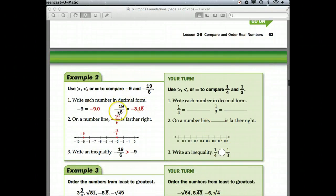Okay, example 2, we're to use the greater than, less than, or equal to, to compare a negative 9 and negative 19/6. So, first of all, let's write them both in decimal form. Negative 9.0, and a negative 19 over 6 is a negative 3.16, repeating.